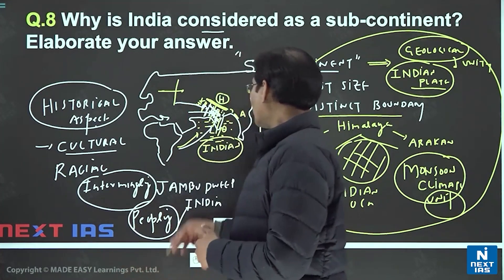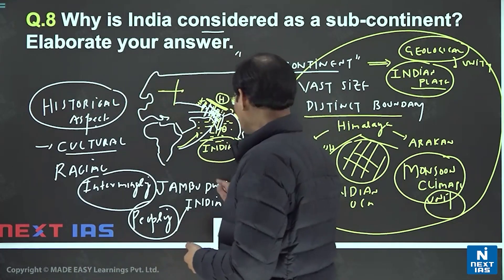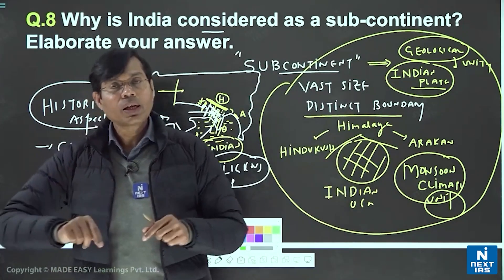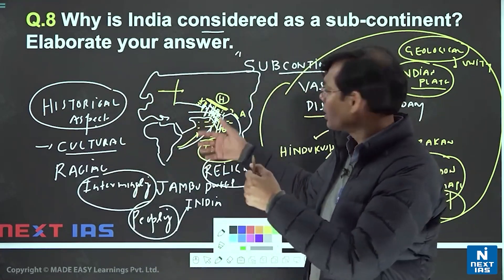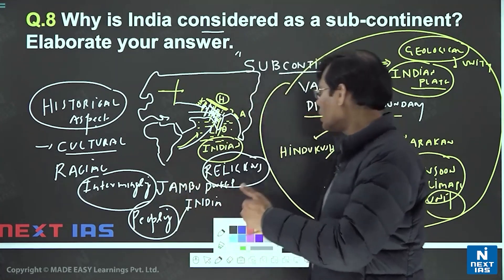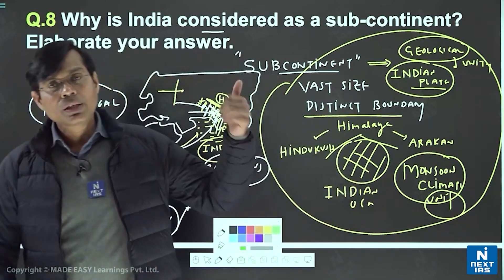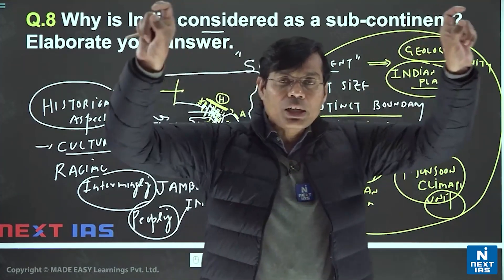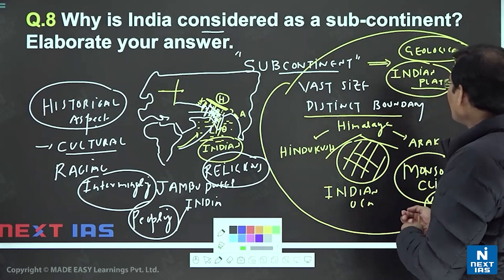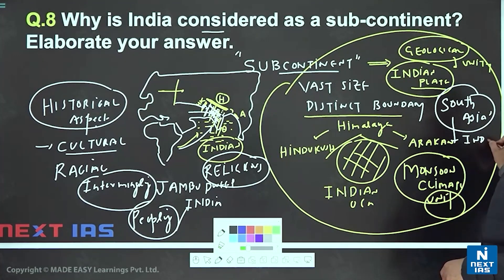Religion also binds this region together. Several religions evolved here — Hinduism, Buddhism, Jainism, and Sikhism — creating a religious unity. Other religions also came and intermingled here, creating a unique system. Languages like Hindustani and shared food traditions further unify the zone. By many dimensions — cultural, racial, religious, geographical, historical, and geological — this region has its own unity and is truly the perfect subcontinent. Politically, it is called South Asia, with India dominating that zone.